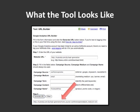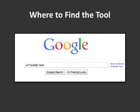So how do you find this tool? Just go to Google and search 'URL builder tool'. The actual URL for it is kind of long and convoluted, so just type 'URL builder tool' into Google, do a search, and it'll usually be the first result that comes up.